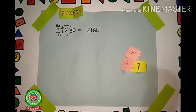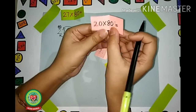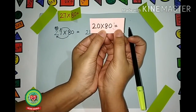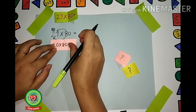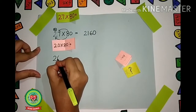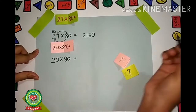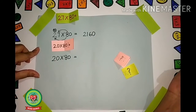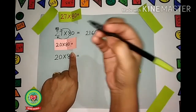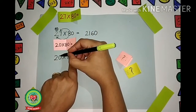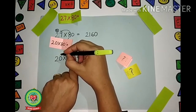Now let us take one more chit. What is the question written over here? 20 × 80. Let us solve 20 × 80. Again, remember to hide the 0. We will hide the 0 with our finger. Now read the question: 20 × 8. We have to multiply 8 with the first digit first, then 8 with the second digit.